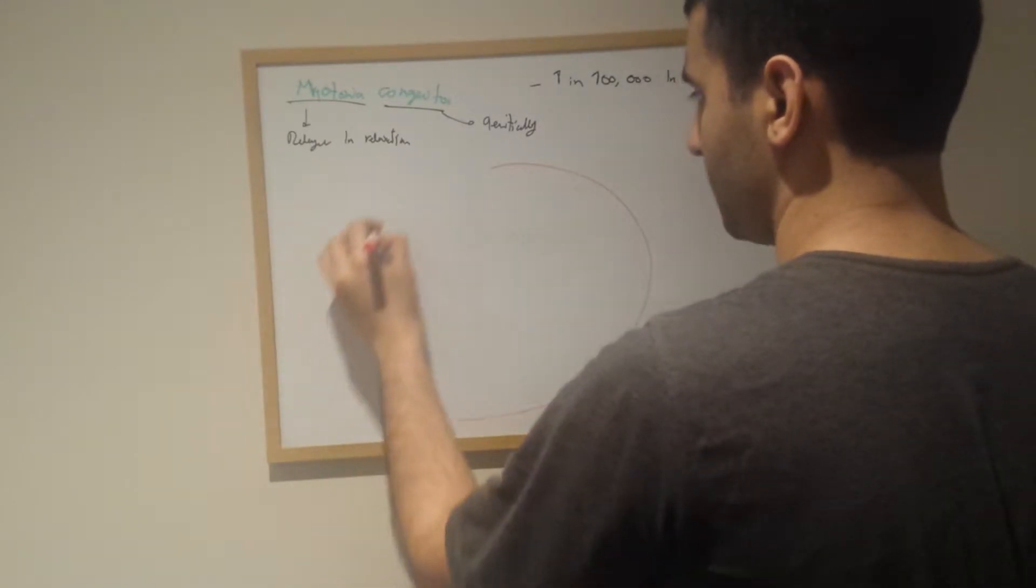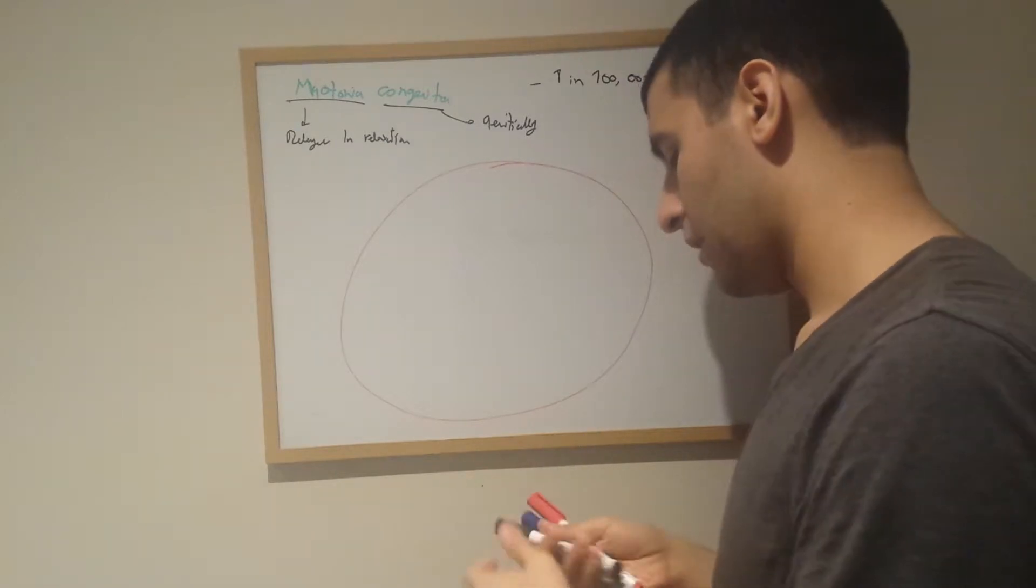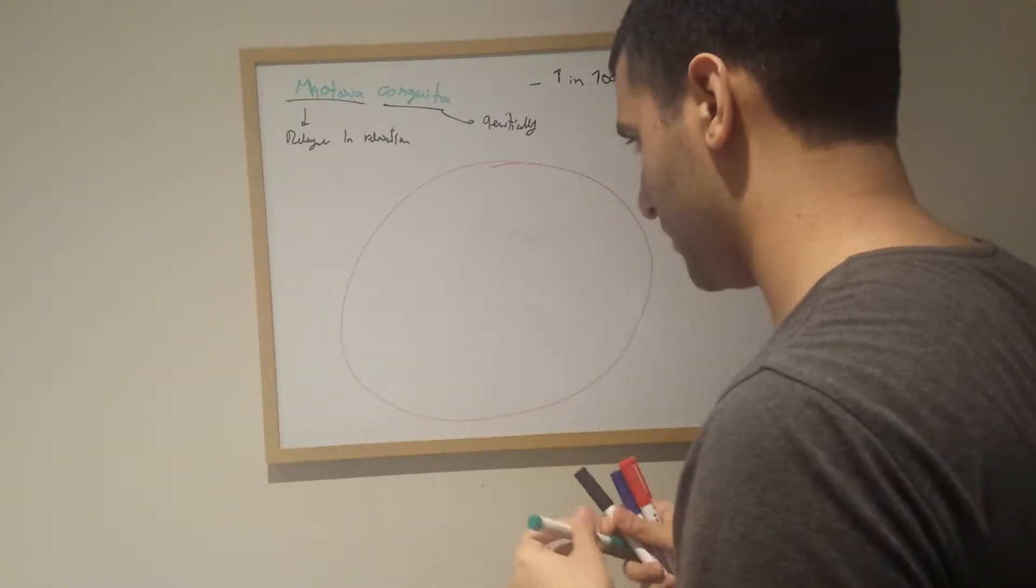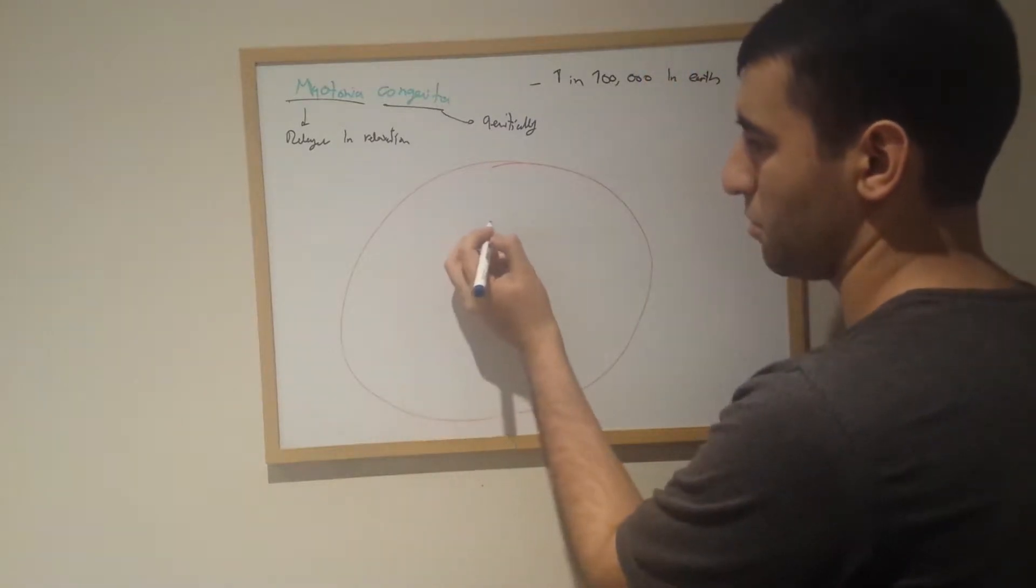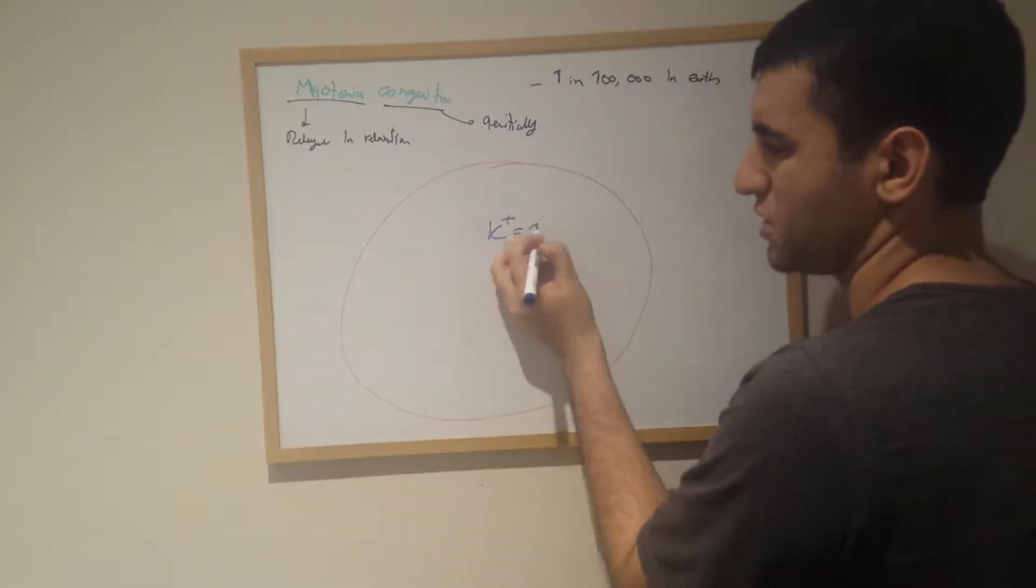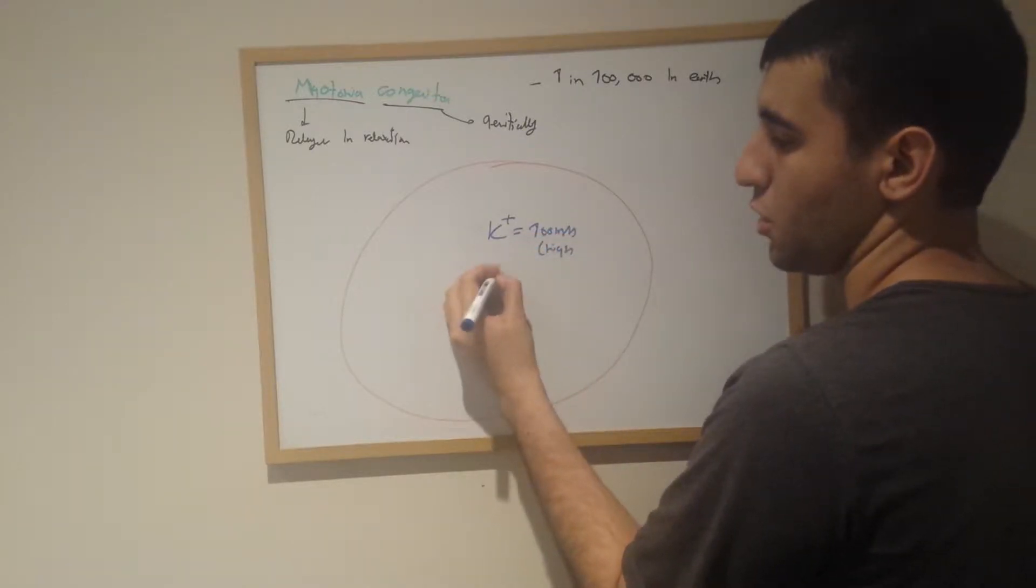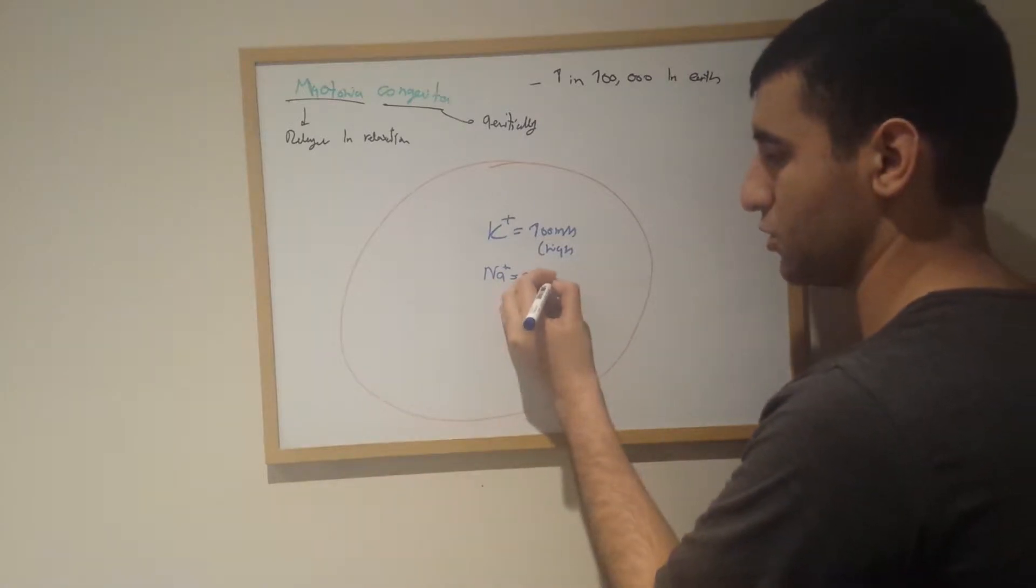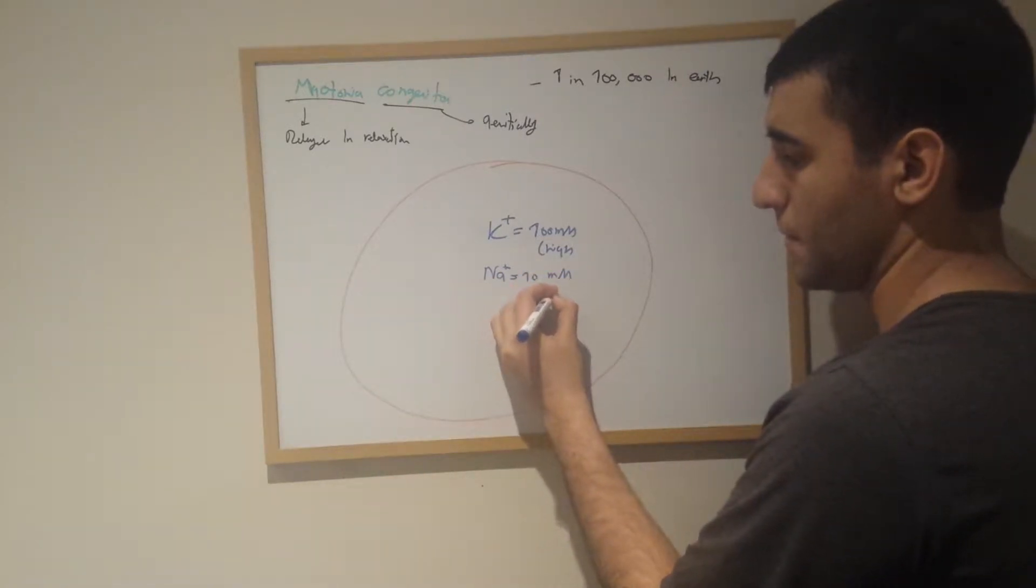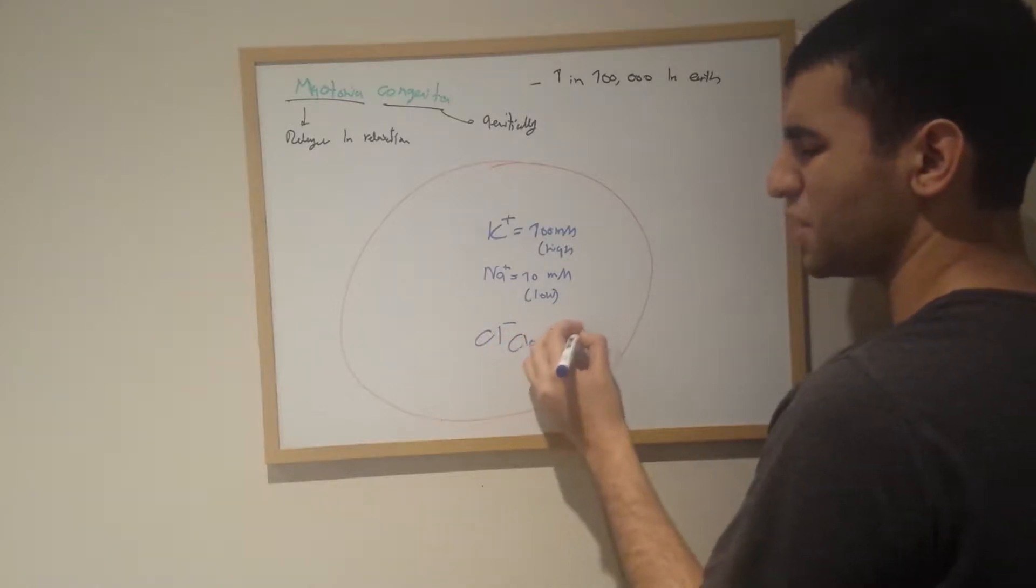Say this is like a heart muscle cell. The concentrations are, for example, potassium is about 100 millimolar essentially being high. Sodium is very low in a typical resting potential, low. And chloride is low too, I think it's about 10 millimolar as well. But this is inside a cell.